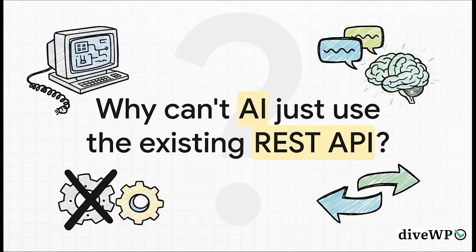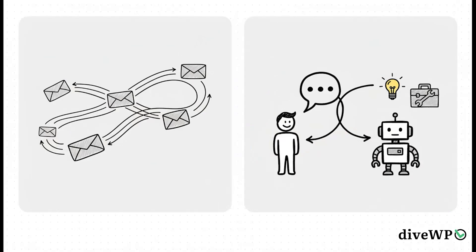The WordPress REST API is super powerful for connecting applications, but it was really designed for a different time. It just wasn't built for the kind of back-and-forth conversational way that modern AI agents need to work. The old REST API is stateless — it's like sending a series of one-off letters. Each request is its own separate thing with no memory of the last one. But MCP, the protocol that modern AIs use, is built for conversation. It remembers the context. It allows an AI to ask your site, "what can you do?" and discover its tools on the fly. A traditional REST API just can't do that.